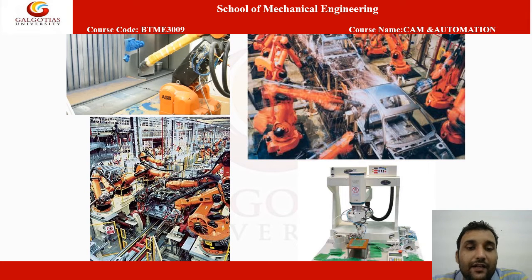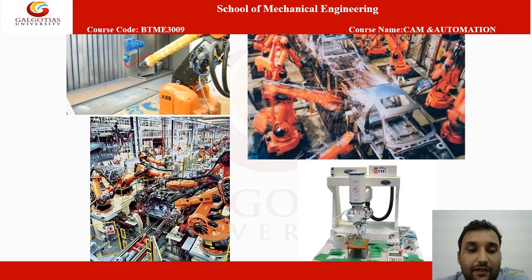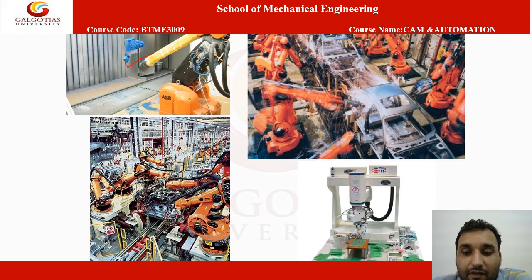What are the components here? This is a robot used for painting purposes, which paints some components. These are robots deployed for welding on the car chassis. These are robots and machines being used for assembly work. And this is a machine robot used for quality assurance and inspection.